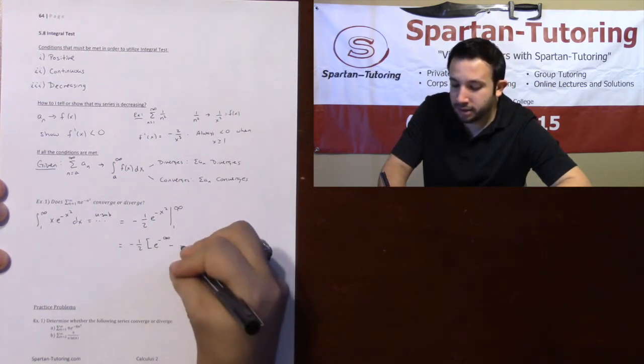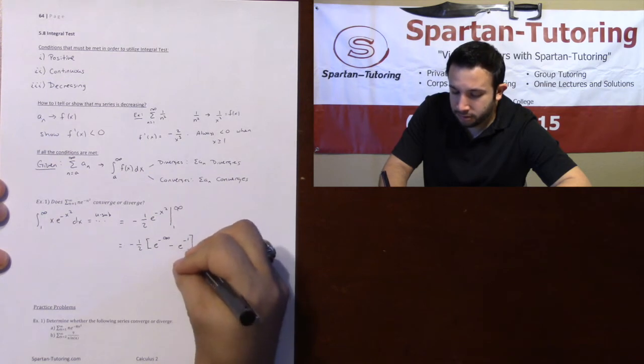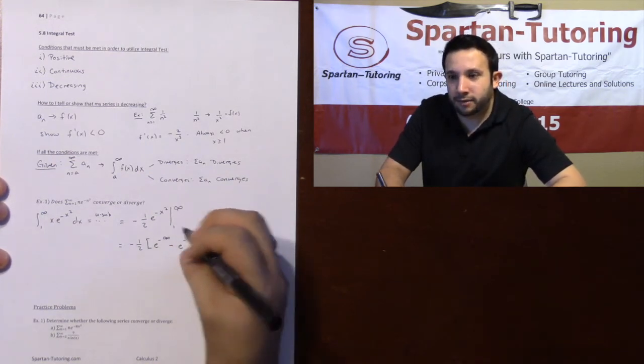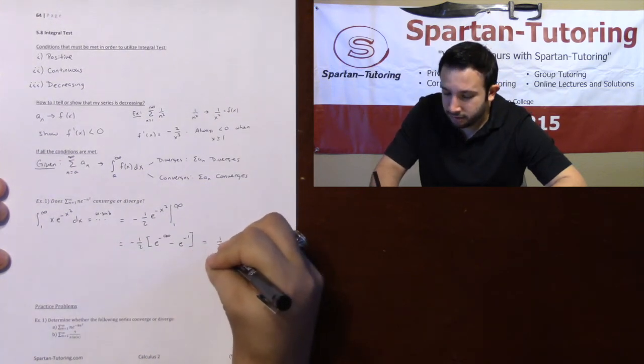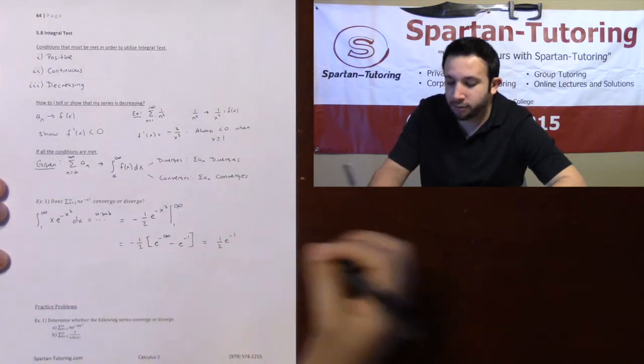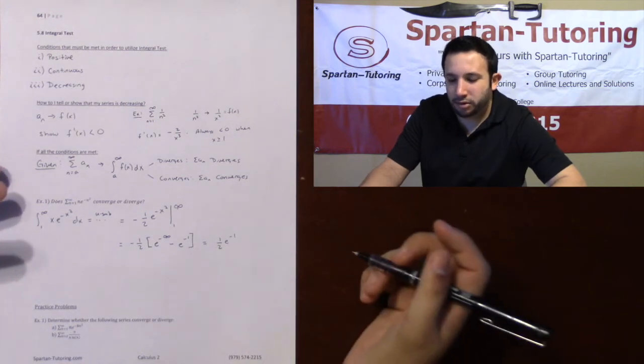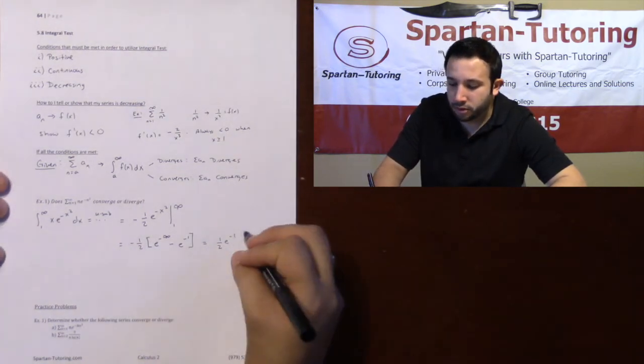Which we know that e^(-infinity) is zero. And since e^(-infinity) is zero, multiply that in there, you have one-half e^(-1). Now here's the thing: I really don't care what it converges to. The point is that it converges.